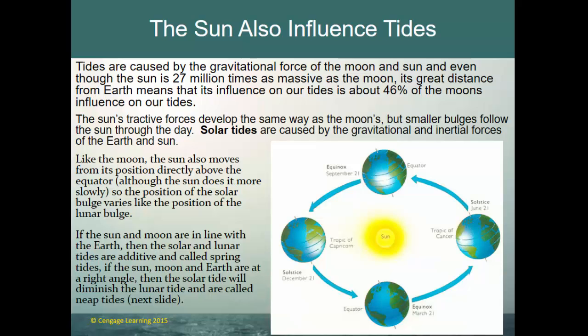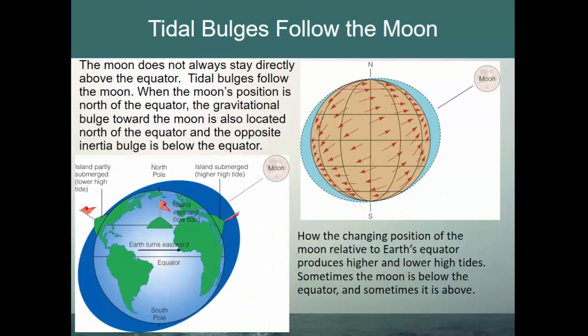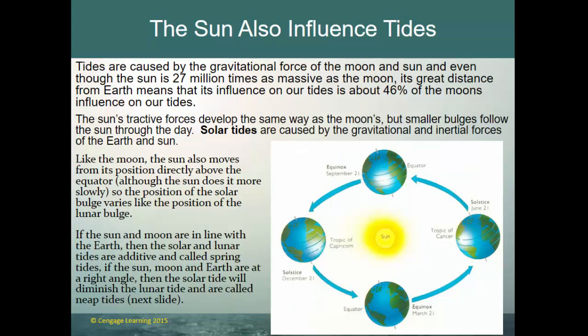The sun also influences the tides. Even though the sun is 27 million times as massive as the moon, its great distance from earth means its influence on our tides is only about 46% of the moon's influence. The sun's tractive forces develop the same way as the moon's, but smaller bulges follow the sun through the day. Solar tides are caused by the gravitational and inertial forces of the earth and sun, very much the same way as with the moon. Like the moon, the sun also moves from directly above the equator, and the position of the solar bulge varies similarly.